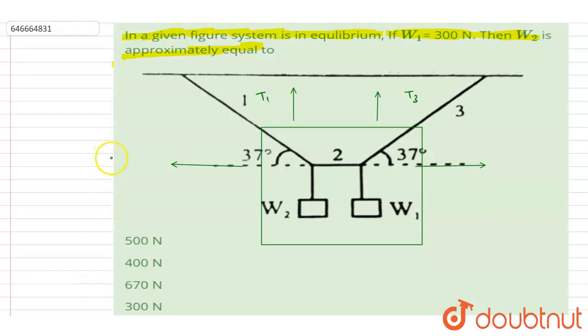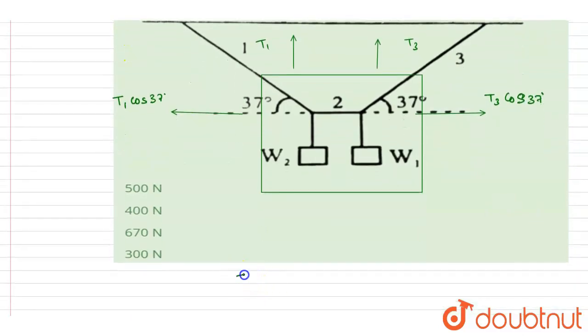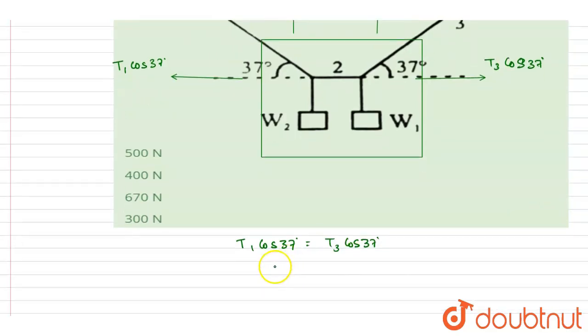I will write down T1 cos 37 and T3 cos 37. If you see here, the net force in the horizontal direction is 0, so T1 cos 37 equals T3 cos 37. So basically, T1 equals T3.